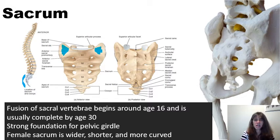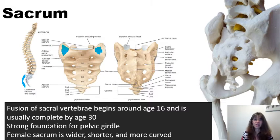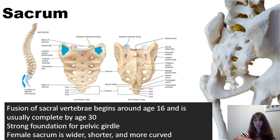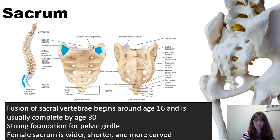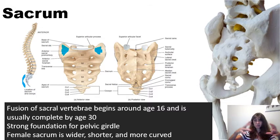In the posterior portion of the sacrum there is a sacral canal. The spinal cord actually ends at about the level of L2, where it splits into another structure called the cauda equina, which means horse's tail. Some of these structures go through the sacral canal, and things will exit through the sacral canal both anteriorly and posteriorly. There is also a network of nerves going to different areas as well.